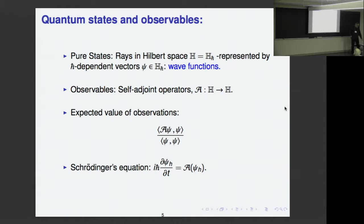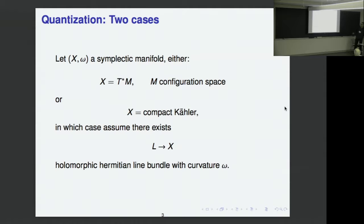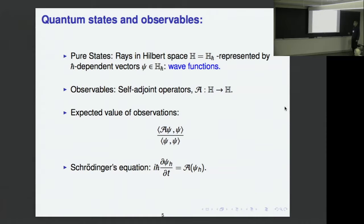There are manifolds like Euclidean space that can be thought of both as cotangent bundles — R²ᴺ as the cotangent bundle of Rᴺ — and as Cᴺ. In that particular case you have both cases, and it turns out it doesn't matter which Hilbert space you use. There is something called the Segal-Bargmann transform that takes you from one to the other. The wave function itself has no physical meaning — it is just a probability amplitude, a complex-valued function that enters through observations.